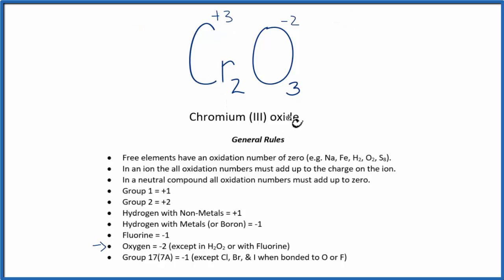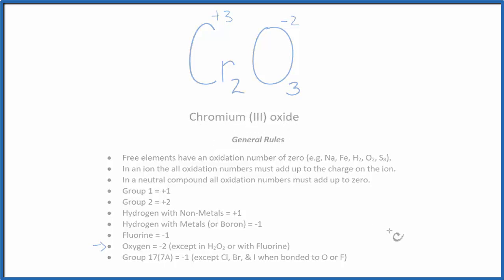So to recap, we found the oxidation numbers for the ones we knew, in this case the oxygen. And with that, we could determine what the oxidation state or number for the chromiums are. This is Dr. B with the oxidation numbers for Cr2O3, chromium 3 oxide. Thanks for watching.